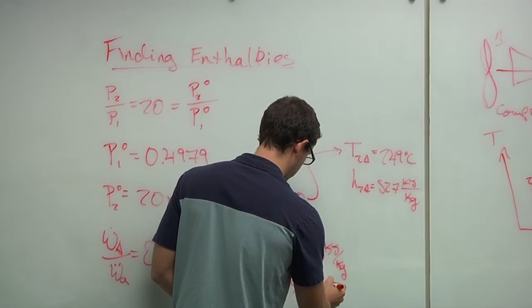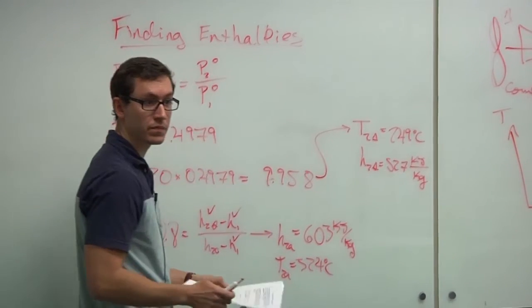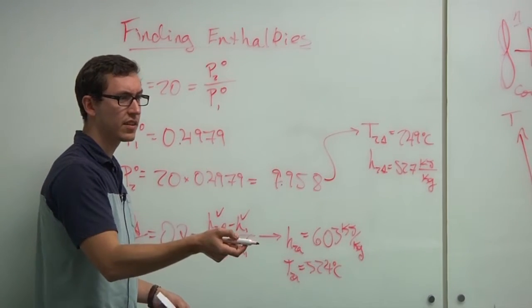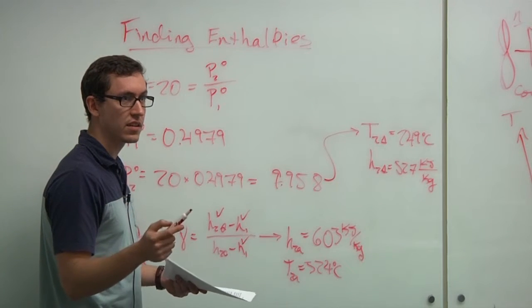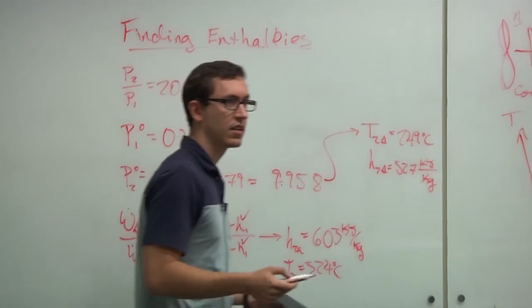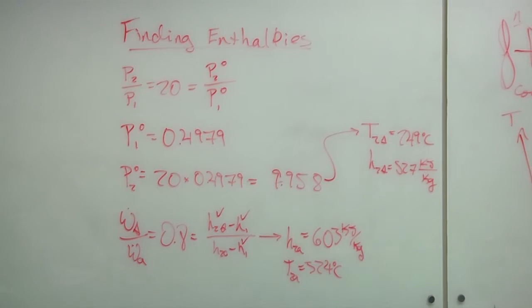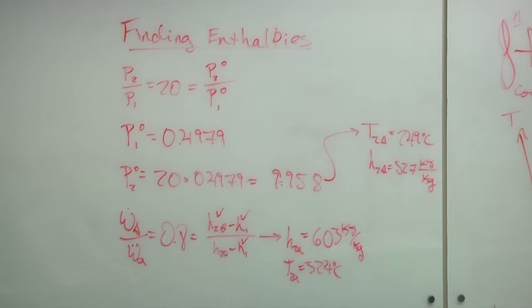We can use our isentropic efficiency of the compressor to find our actual temperature and enthalpy. So, now we can say W isentropic over W actual is equal to 0.8. It's equal to H2S minus H1 over H2A minus H1. We know H2S and H1. So, from that, we can get H2A is equal to 603. And that our temperature at that point is equal to 324 degrees C. Does that make sense? Can someone pass some handouts down to the front?